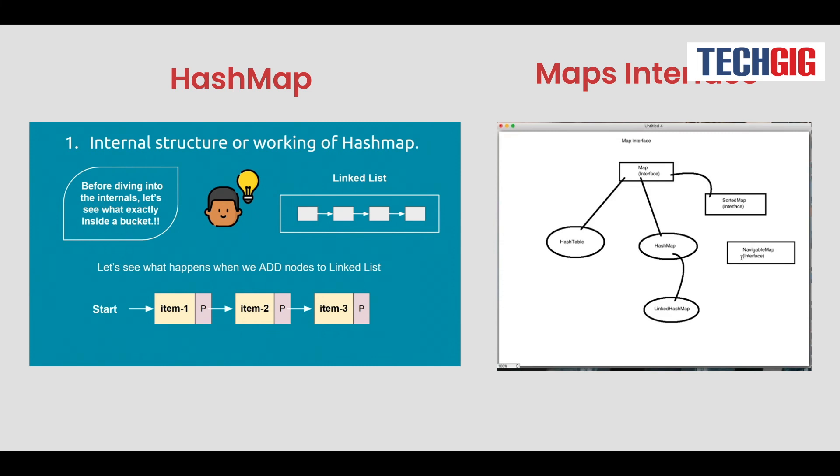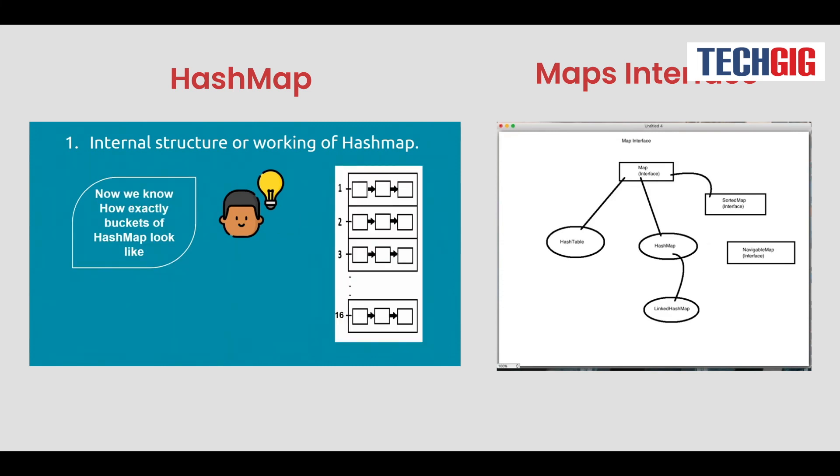However, if you declare it as HashMap and wish to alter the underlying implementation, you'll need to change the contract. Programming against interfaces, rather than implementations, provides the added benefit of keeping flexibility.